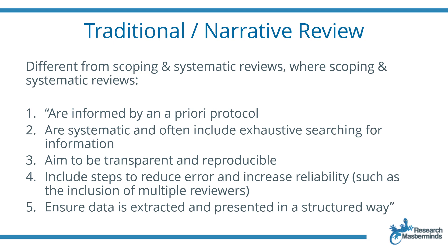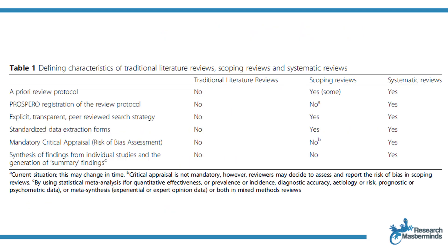Data is extracted and presented in a very structured way. In Table 1 of this article, the difference between the three types of reviews becomes clear — traditional literature reviews, scoping reviews, and systematic reviews are all compared to one another. The a priori protocol is usually present in scoping reviews and systematic reviews.